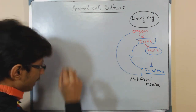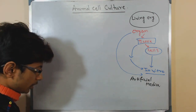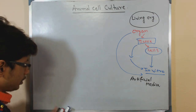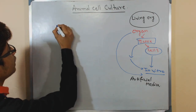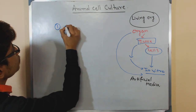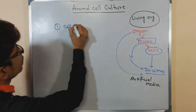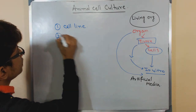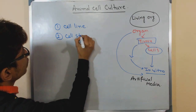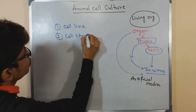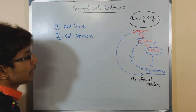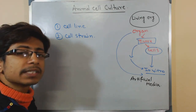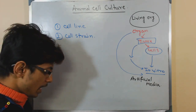We will be studying some more terminology. The two terminologies we are going to see are cell line and cell strain. These are very important. So, what is cell line and what is cell strain?